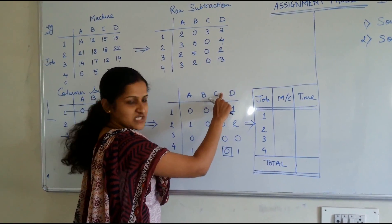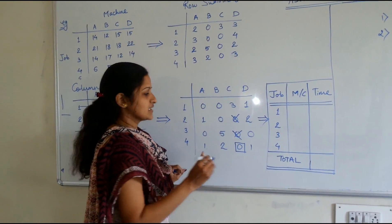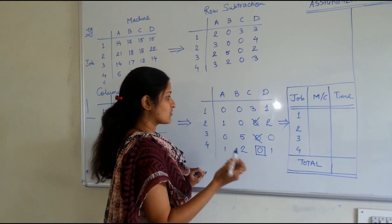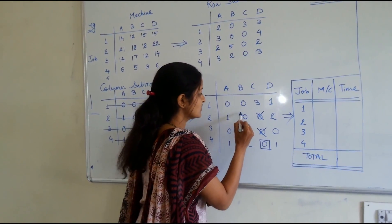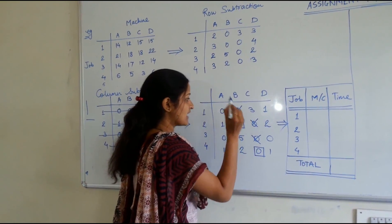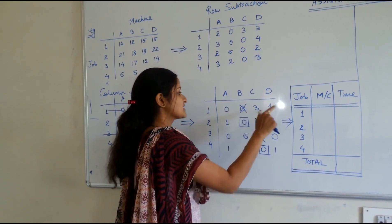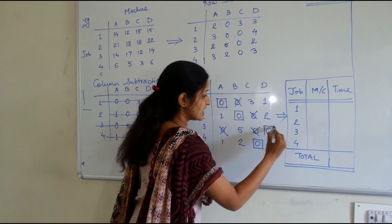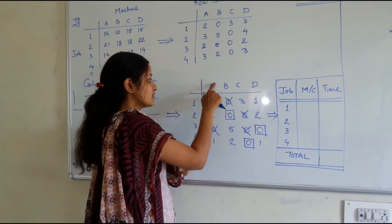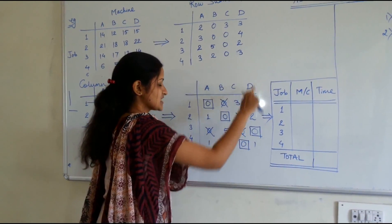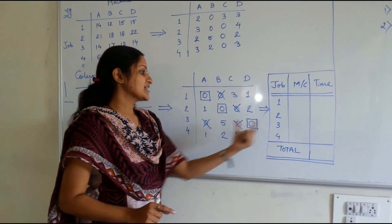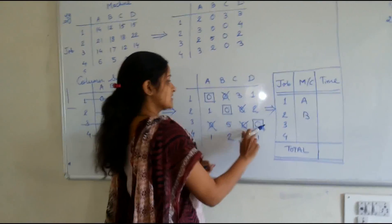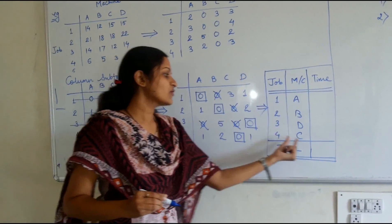As job number 4 is assigned to machine C, no other job can be allocated to machine C. Therefore cut all other zeros in that particular column and row. Now checking again — in one row there is only one zero, so make the allocation there. Once made, cut that zero out. Next, there is again only one zero remaining, make allocation there, and once that is crossed there is only one zero left — allocate there. So: job 1 is assigned to machine A, job 2 is assigned to machine B, job 3 is assigned to machine D, and job 4 is assigned to machine C.